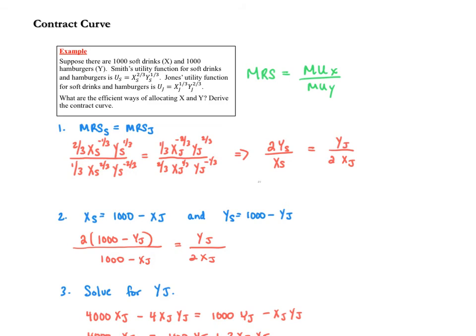Here's my work. Remember that the MRS is a ratio of MUx to MUy. For Smith, the MRS is 2Y over X, and for Jones, Y over 2X. Again, for exchange efficiency, Jones' MRS should equal Smith's.